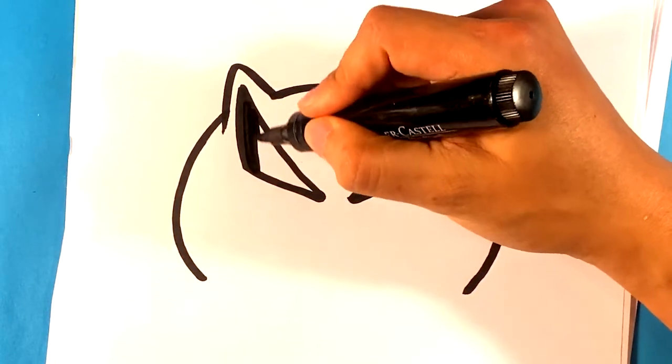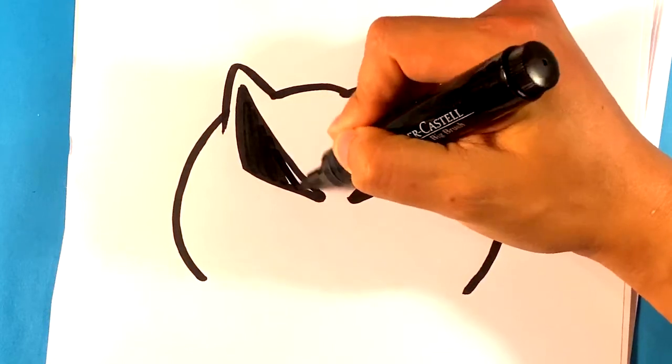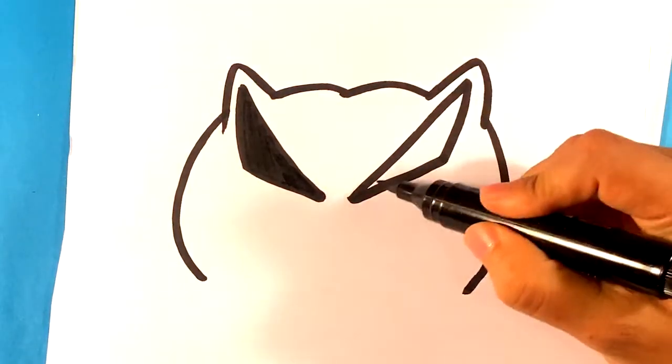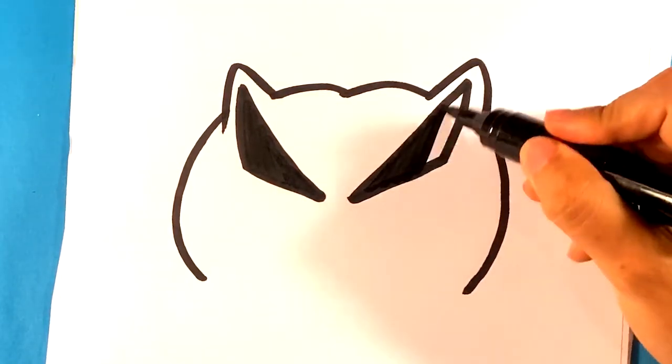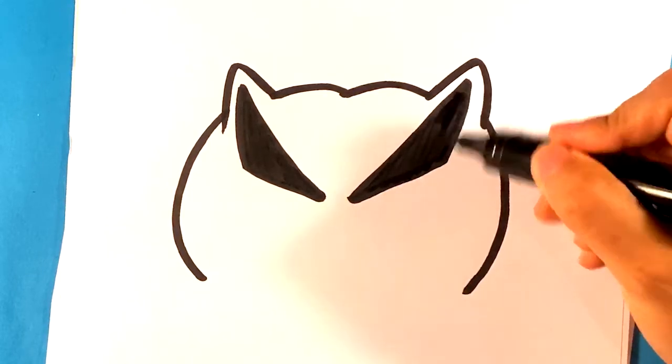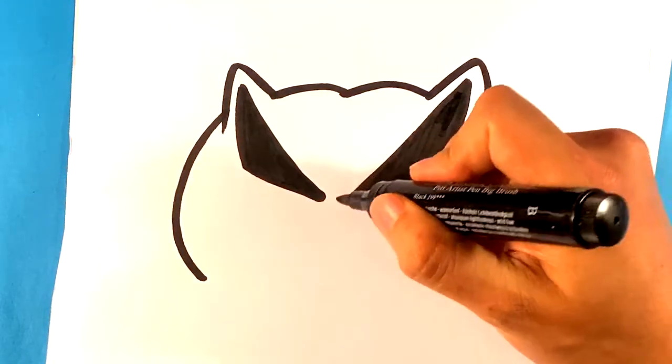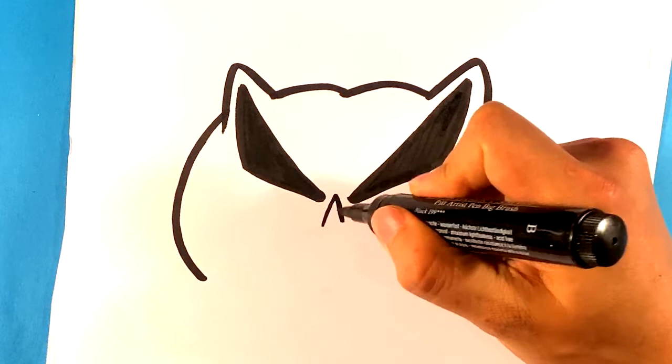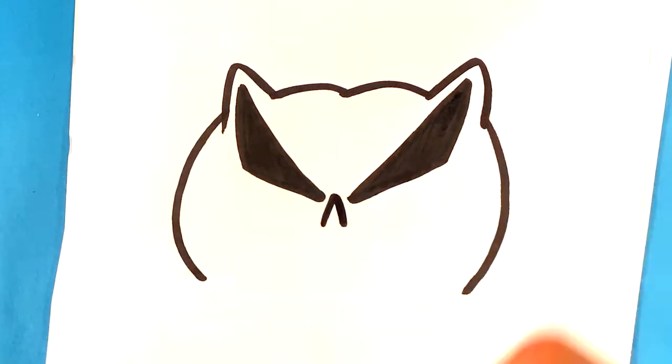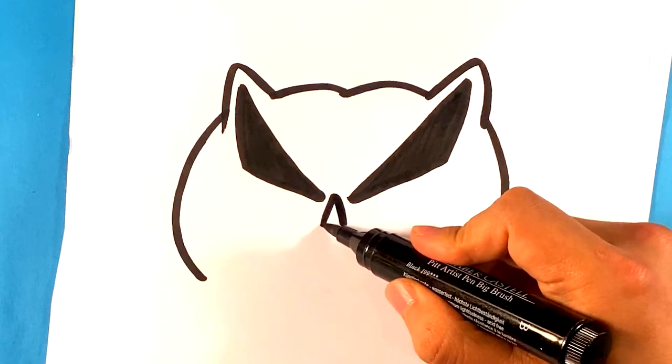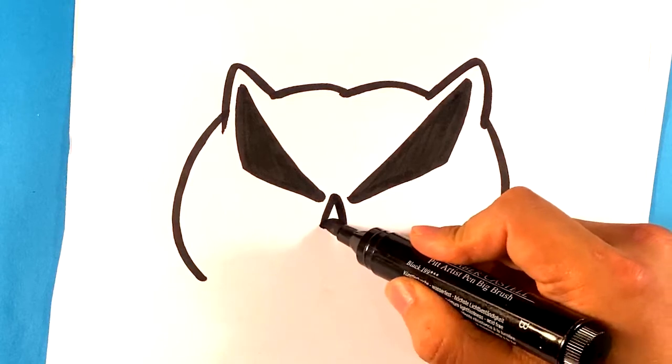I'm going to fill this in now. I'll fill this side in as well. I'm going to put a small nose over here, kind of a triangle shape. Close that off.